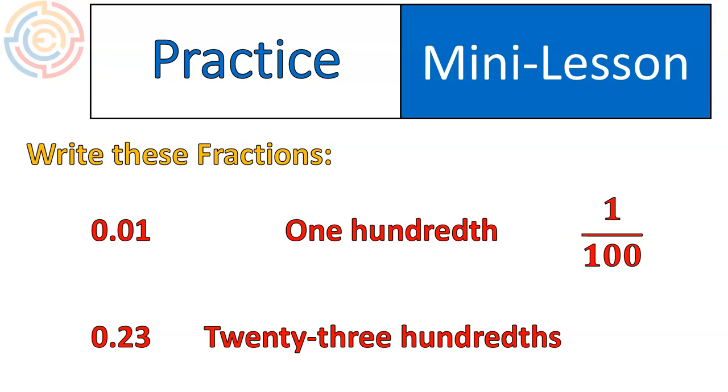So this one here, it ends on the three, so that's in the hundredths column. And then you just say whatever number that is, hundredths. In this case, twenty-three hundredths.